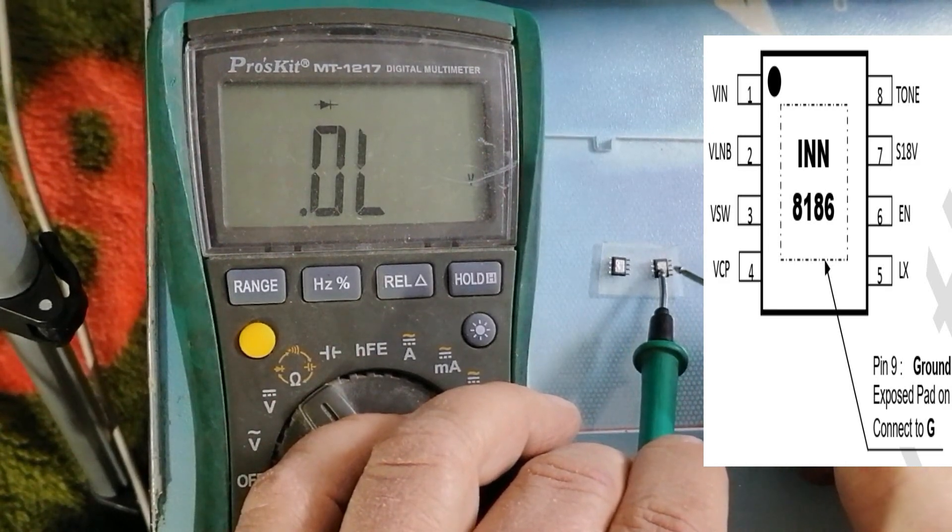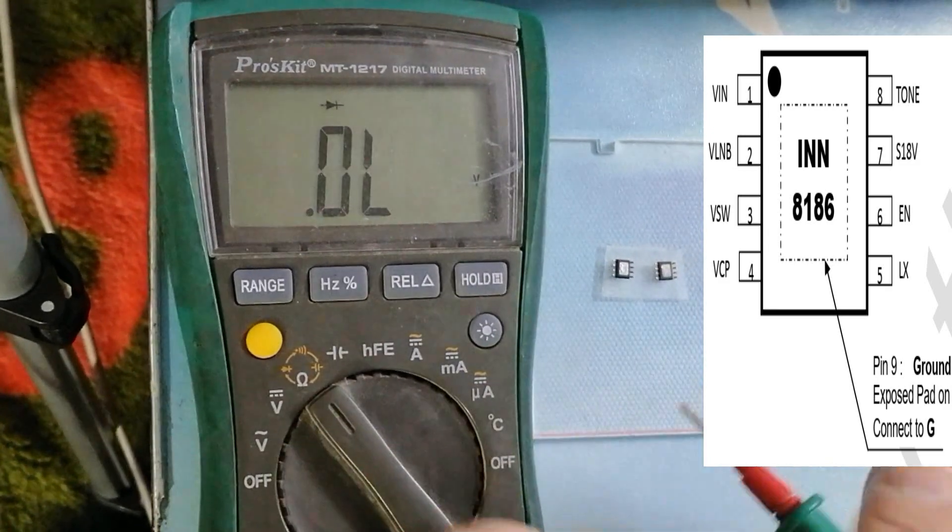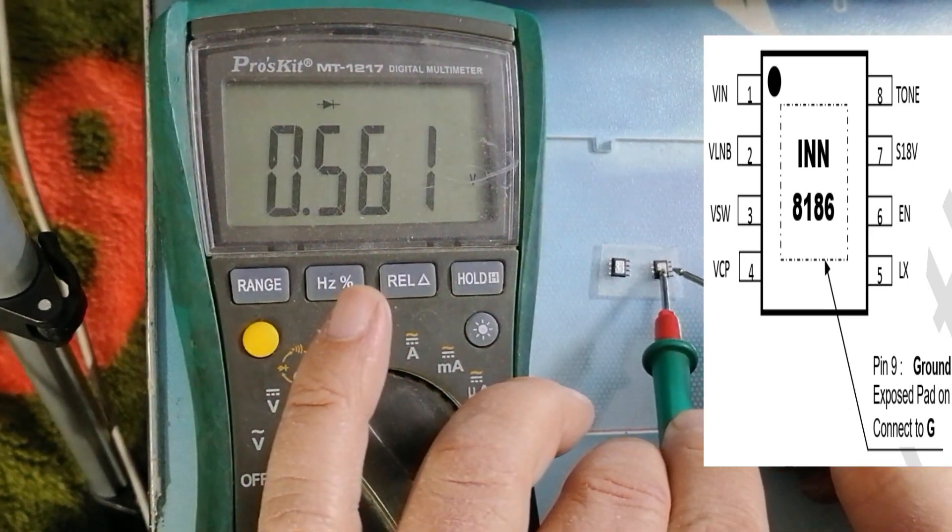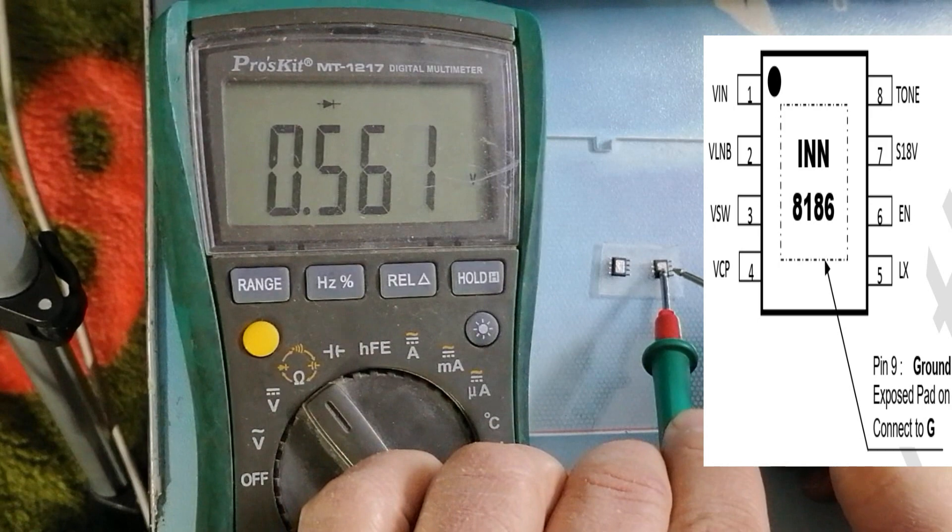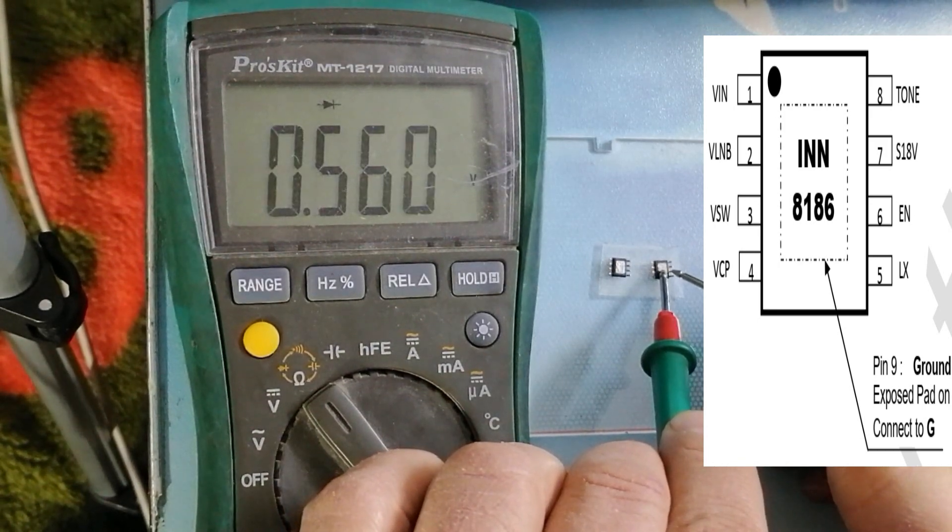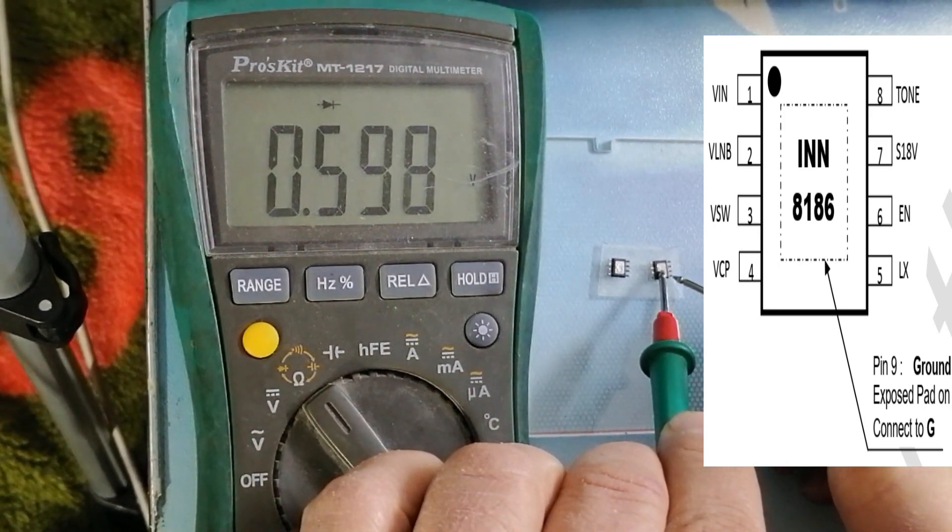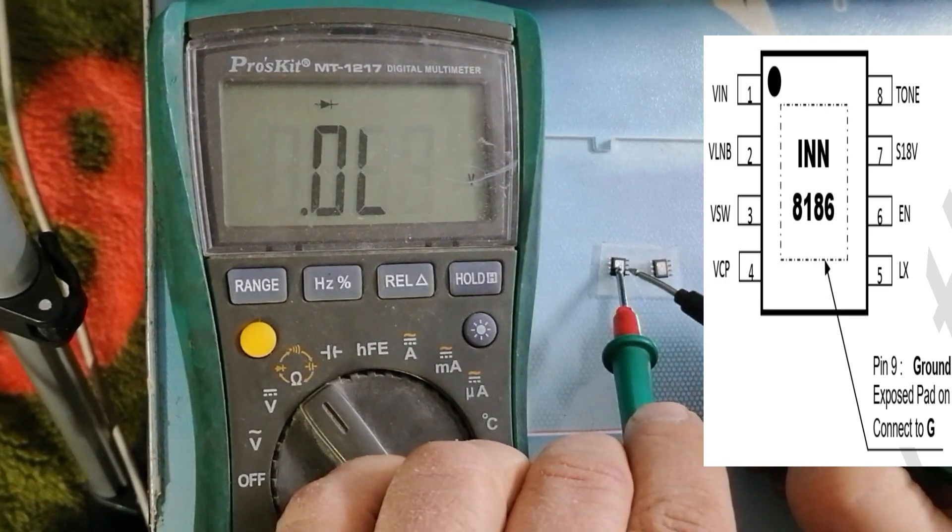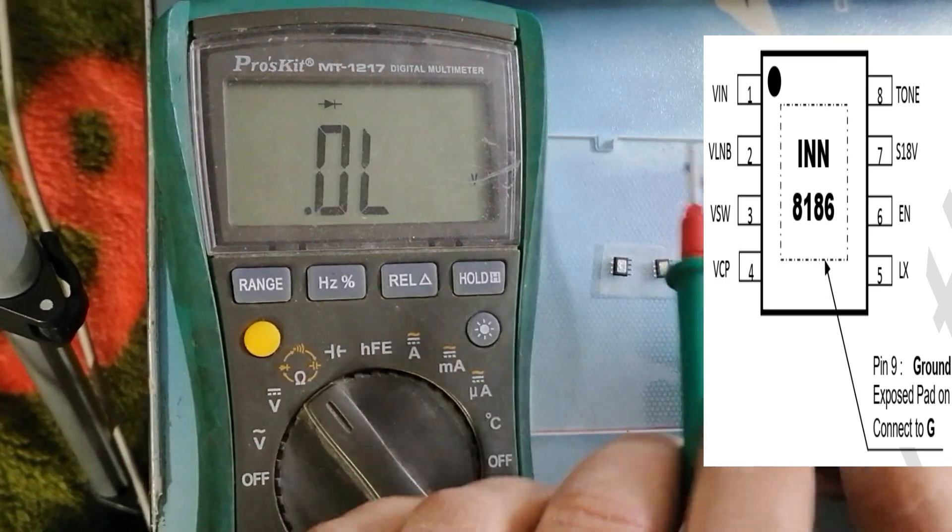If we compare with the new one, as you see there is no reading. And we reflect the tip, see it reads something like a diode, 560, 560, 590. But here it's straight short.